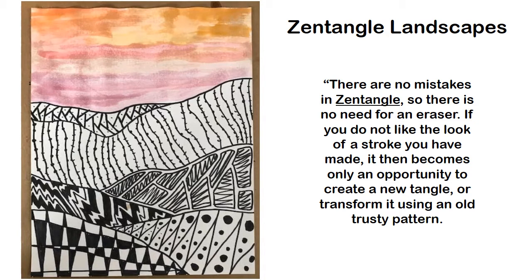Middle schoolers, that is it — that's our lesson on Zentangle landscapes. I wanted to leave you with this quote: there are no mistakes in Zentangle. If there's a need for an eraser or if you do not like the look of a stroke you have made, it becomes only an opportunity to create a new tangle or transform it using an old trusty pattern. Trust yourself — if you feel like you make a mistake, change it into something you like and it can look great on your Zentangle. The whole idea behind Zentangles is that they calm you down and chill you out. So if you're feeling some high stress in your life right now, definitely do this lesson — it will help you out. See you next week.